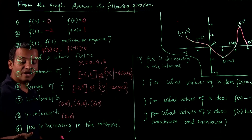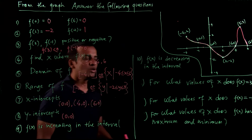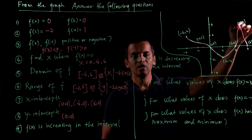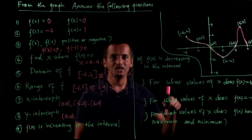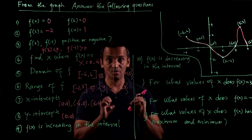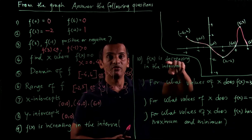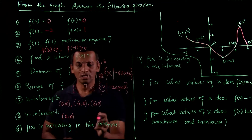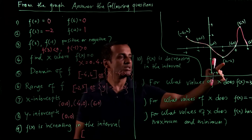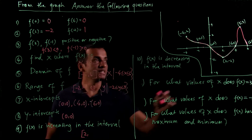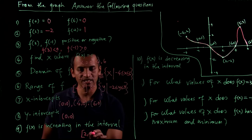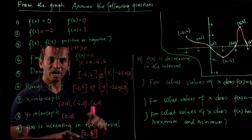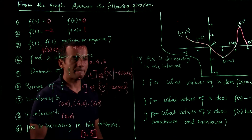Number 9 is: f(x) is increasing in what interval? When writing the interval where the function is increasing or decreasing, you write the x-values only. The function is increasing starting from x = 2 and ending at x = 5. So when x is between 2 and 5, the function is increasing.